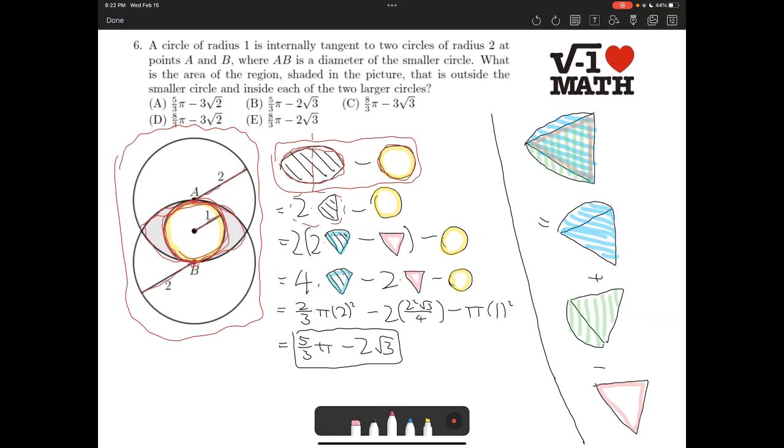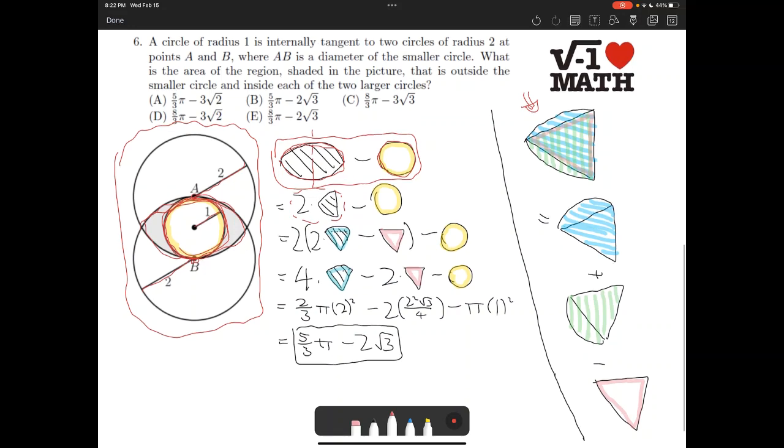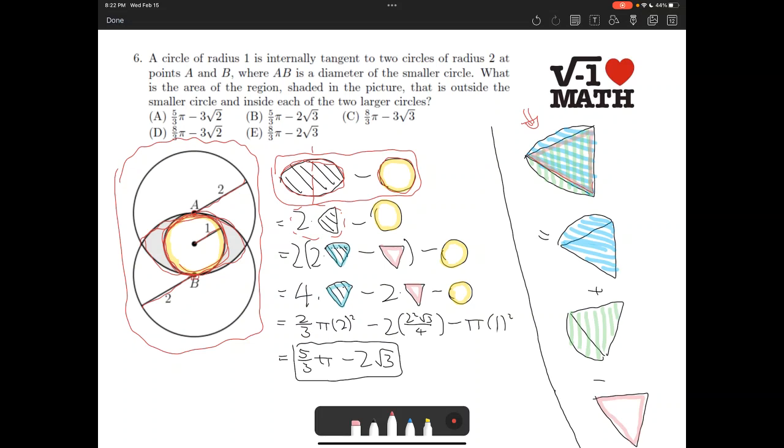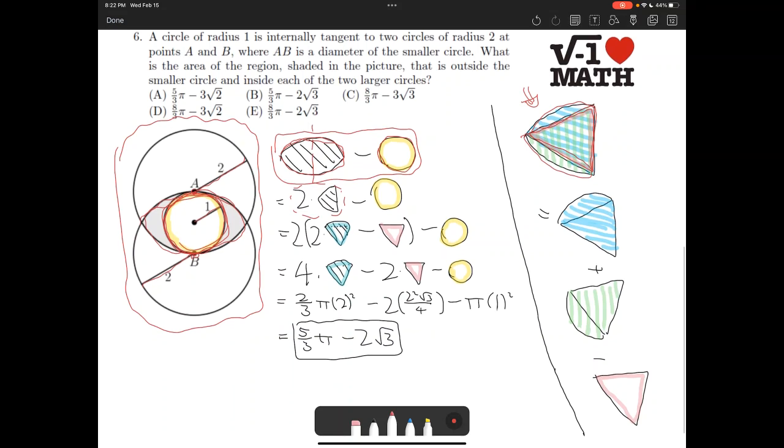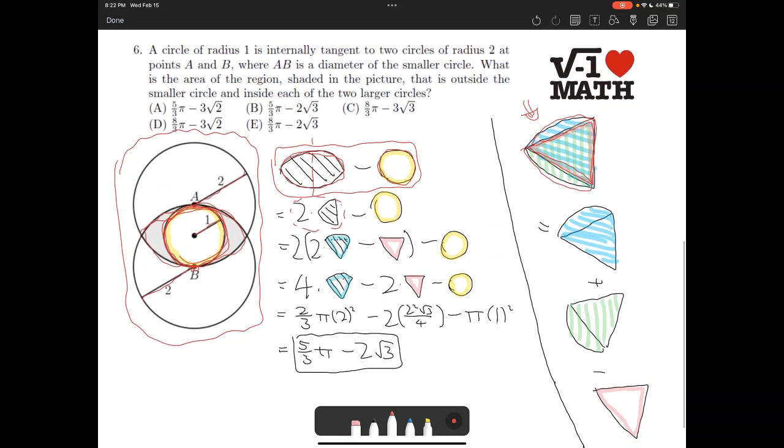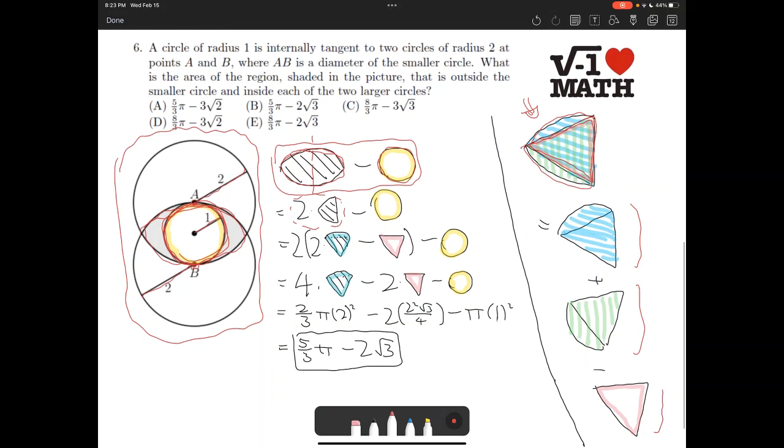Now we use this diagram here. This is a close-up of our problematic region. Notice that this is equal to the blue 60-degree arc plus the green 60-degree arc. And now we have an equilateral triangle that we over-counted in red here. So this entire area is equal to the blue arc here, plus the green arc here, minus the red triangle.